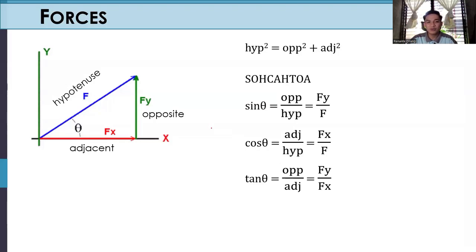Let us discuss how to convert F into FY and FX. First, we have our angle theta. The opposite side is called the opposite side, and the side adjacent to our angle is called the adjacent side. The side opposite our 90 degrees is called our hypotenuse. As we know from the Pythagorean theorem: hypotenuse squared is equivalent to opposite squared plus adjacent squared.